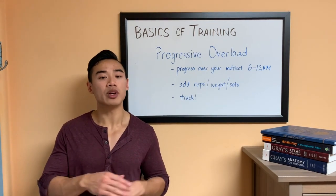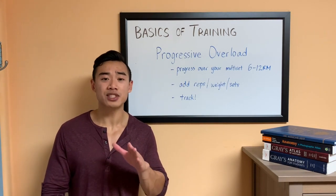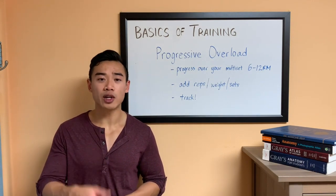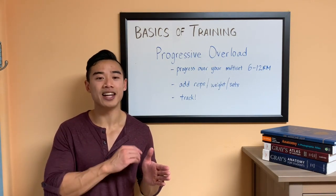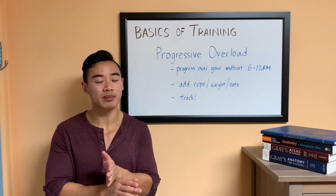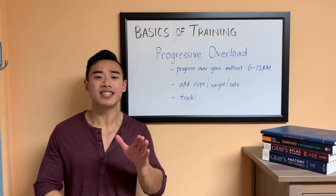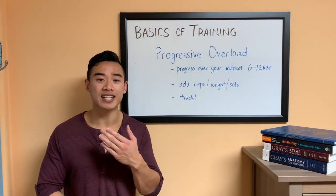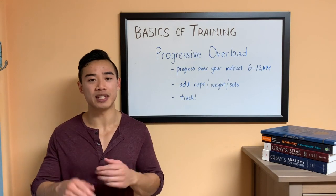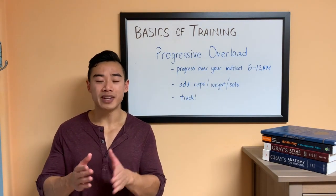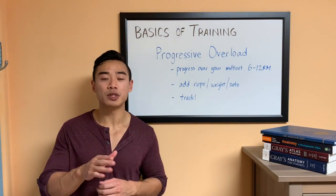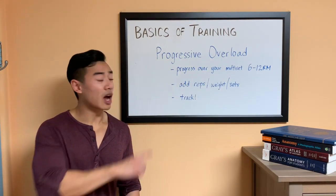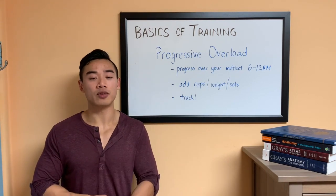How frequently you can progress depends on your training age. As a rank beginner, I would strongly encourage athletes to try to add a rep or an incremental amount of weight every session, because they are often able to progress at this fast rate. Obviously, we want to progress as quickly as possible to get the best gains. As you get into a more intermediate stage, you may only be able to add weight or a rep every week or every month. To facilitate progressive overload, you should track your reps and sets for every workout.